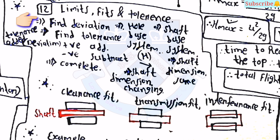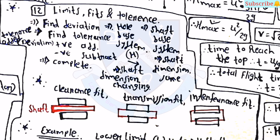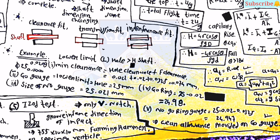The next topic is limits, fits, and tolerance. First find the deviation, then find the tolerance. For finding deviation, two systems are used: the hole-base system and the shaft-base system. Three types of fits are: clearance fit, transition fit, and interference fit — you can see the diagram for each. If the tolerance is positive, add the value; if negative, subtract. An example is provided — you can take a screenshot if you want.